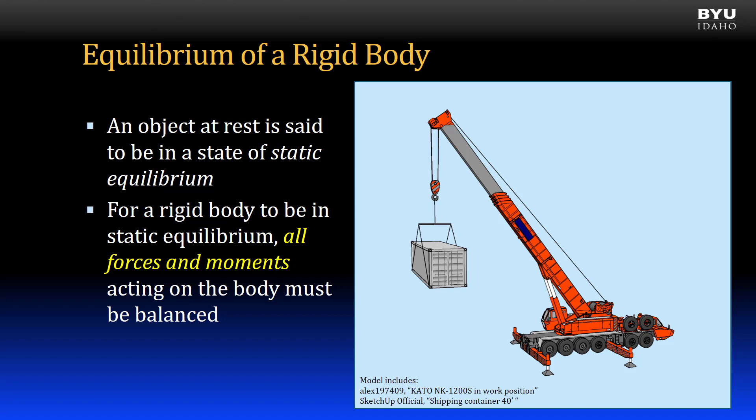For a rigid body to be in a state of static equilibrium, all forces and moments acting on the body must be balanced. Consider this crane lifting a loaded shipping container. We will assume the crane behaves as a rigid body. If the crane is not in motion, then it is in a state of static equilibrium.